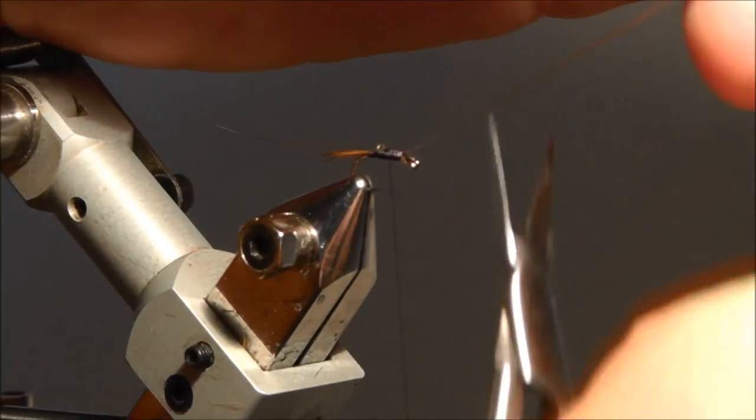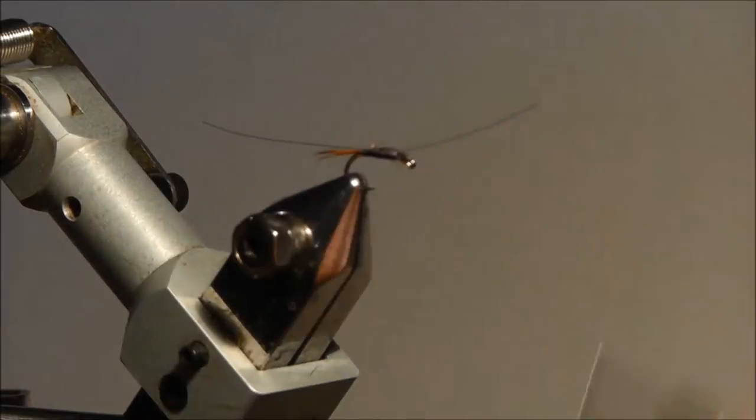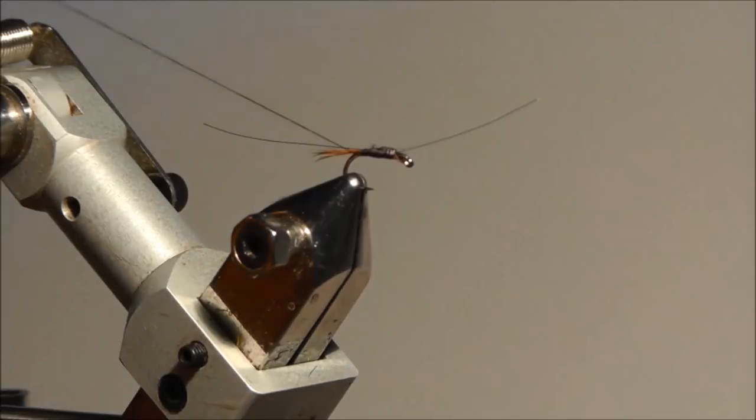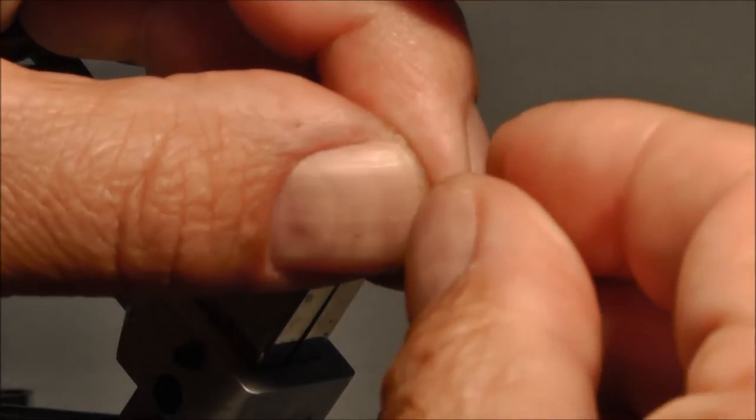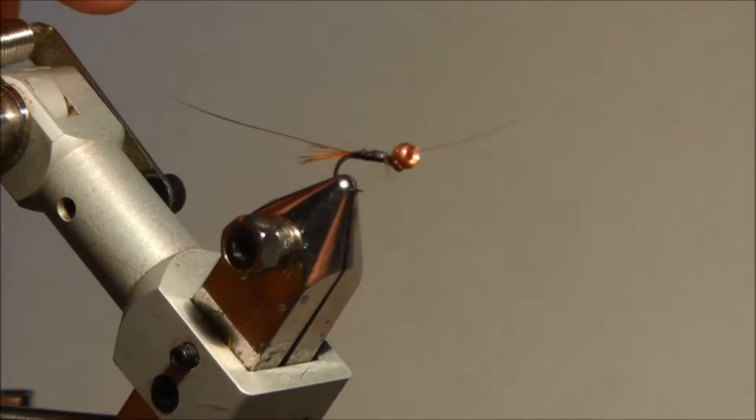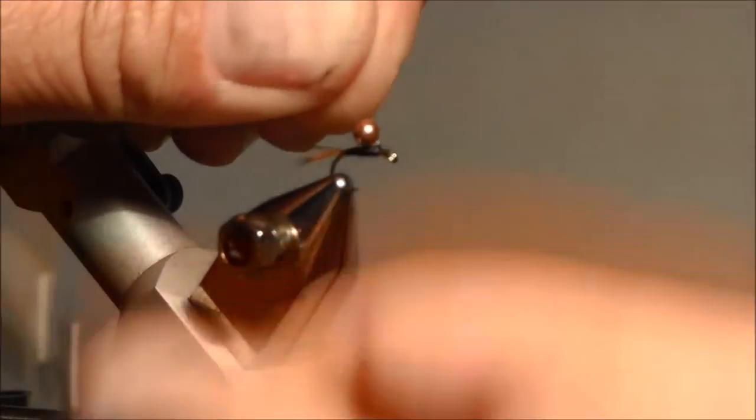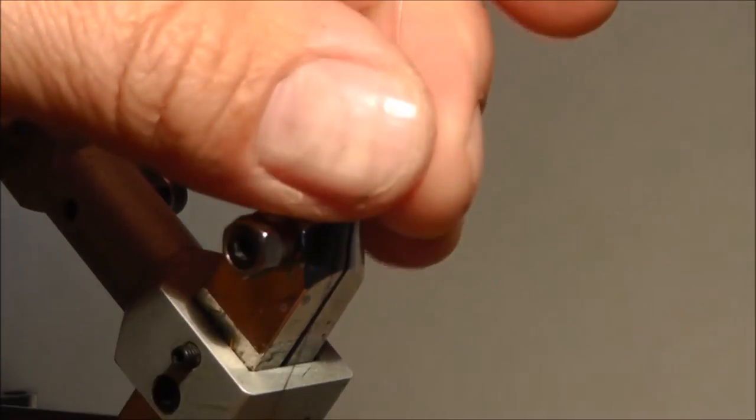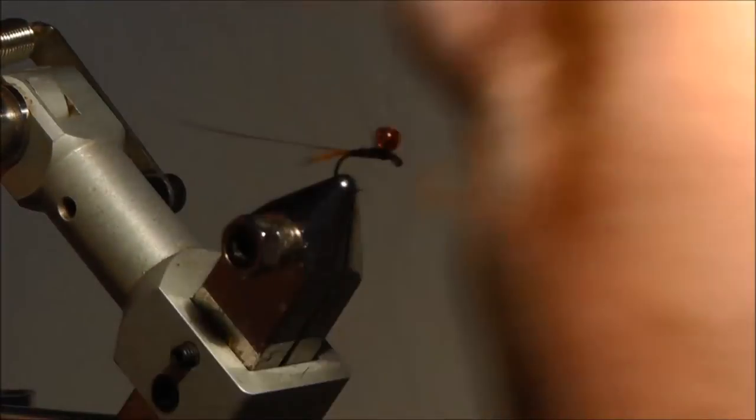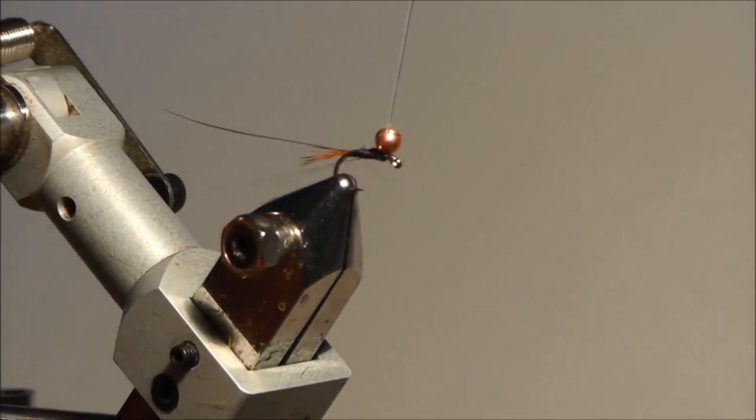We only need that piece of mono. Okay, the next thing we're going to do is secure a bead onto the mono. Maybe a couple of windings in front of the mono. So the mono is on top of the hook. Okay, put that away.